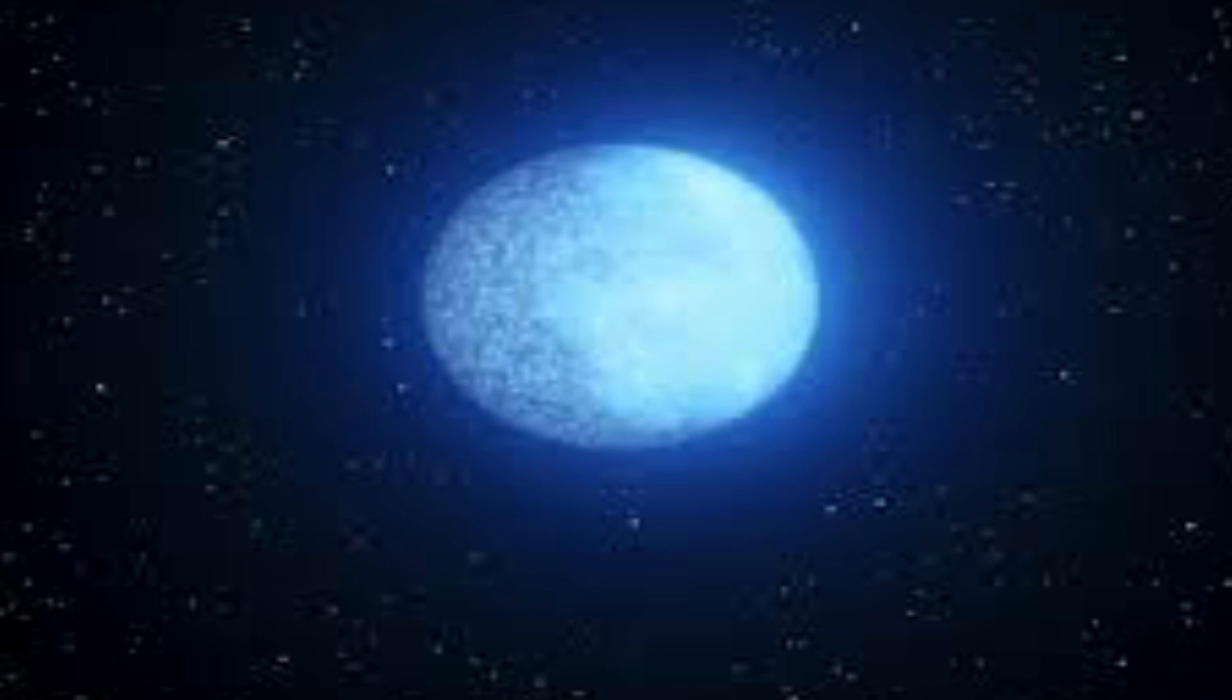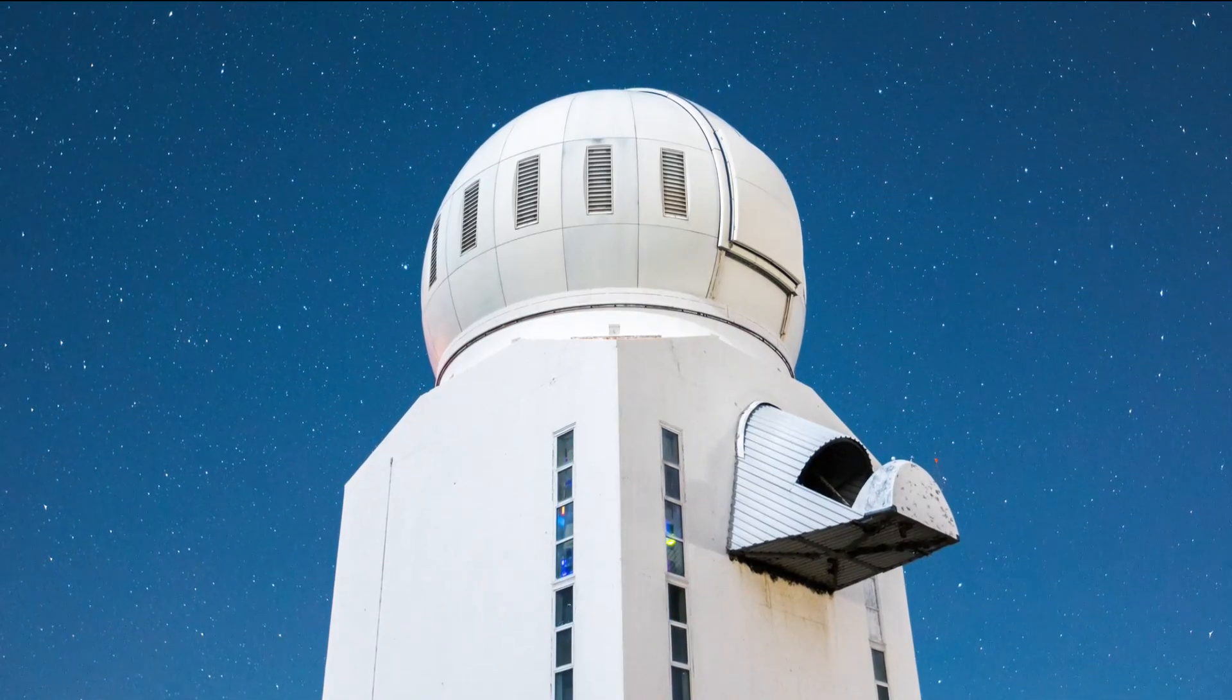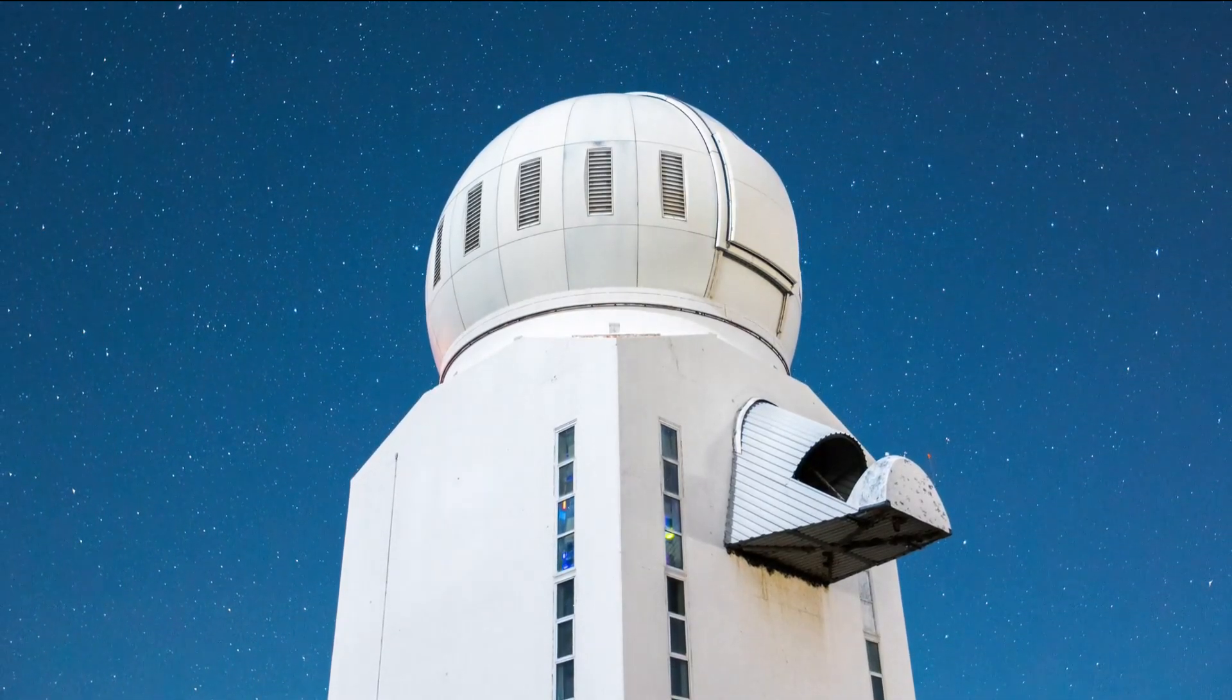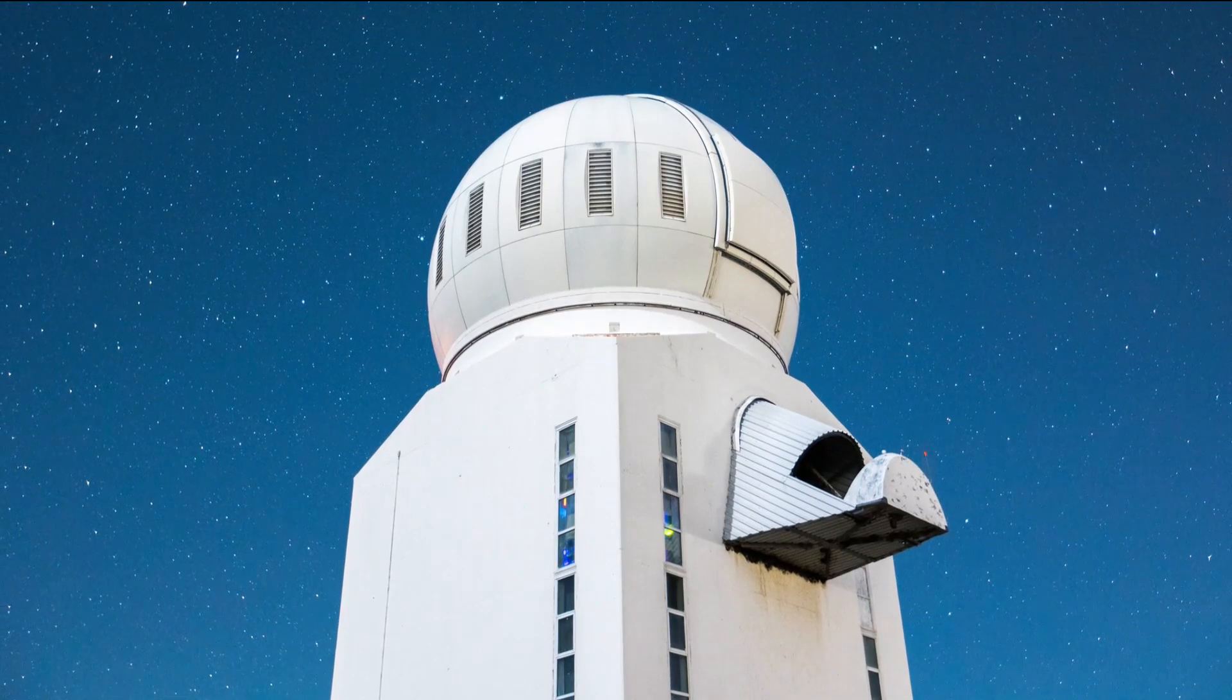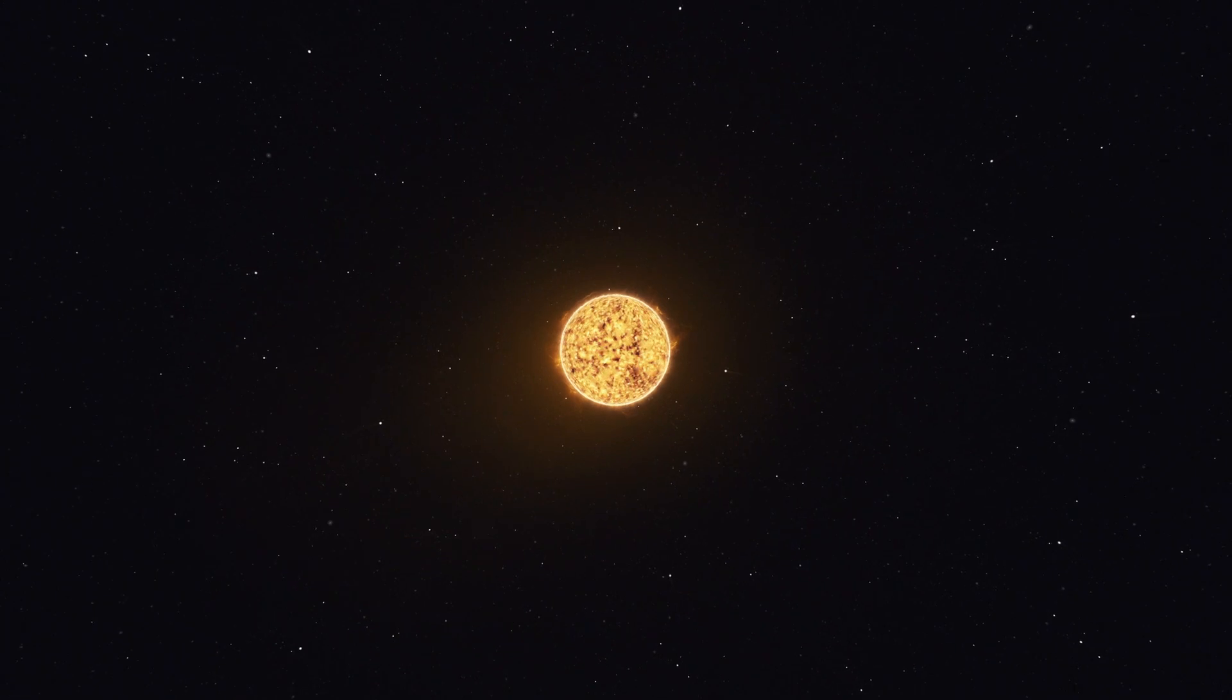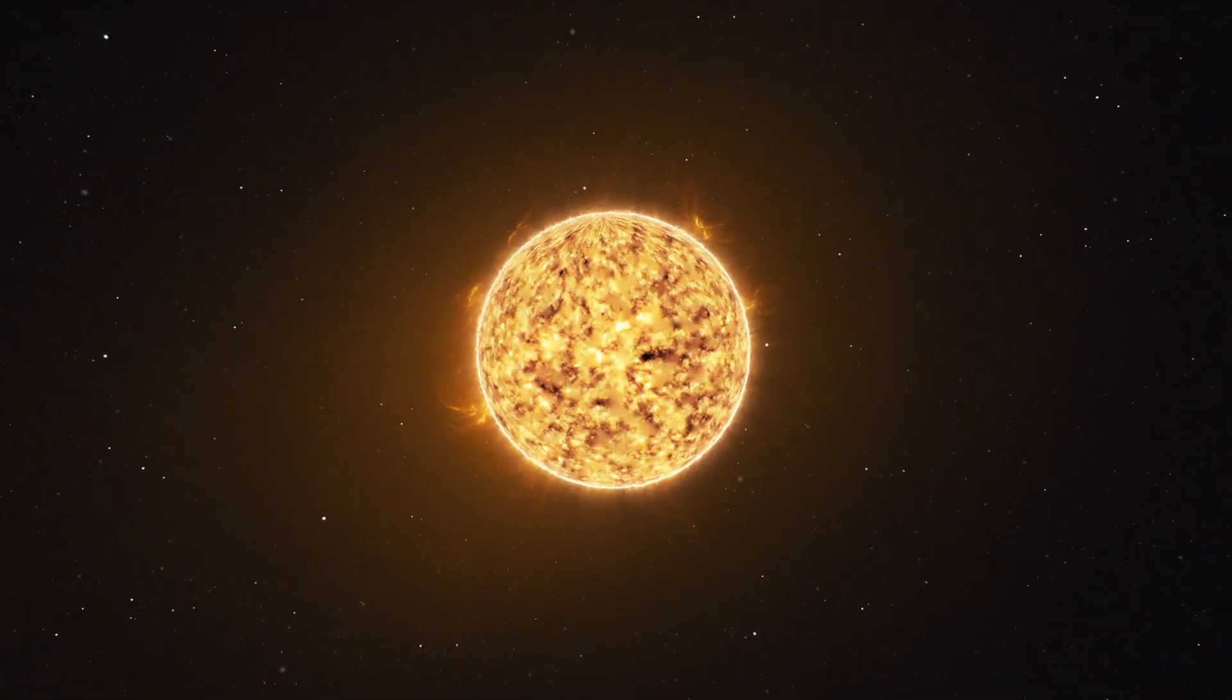Before delving into the fascinating details of this discovery, it's worth recalling the stellar life cycle of the Sun. As the Sun ages, it goes through a phase of expansion, becoming a red giant that encompasses the orbits of Mercury, Venus, Earth, and possibly Mars.